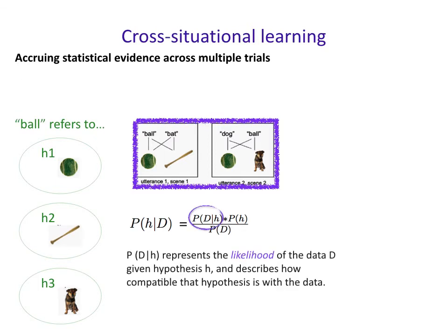The first piece is the probability of the data given the hypothesis — P(D|H). This represents the likelihood of the data D occurring if that hypothesis H were true. It describes how compatible that hypothesis is with the data: can it account for the data in D?